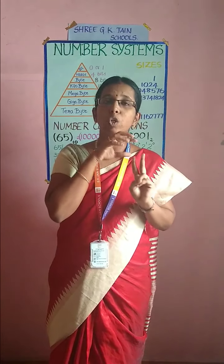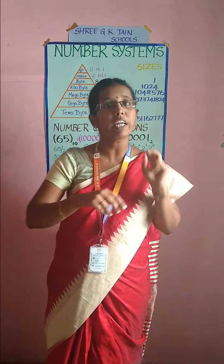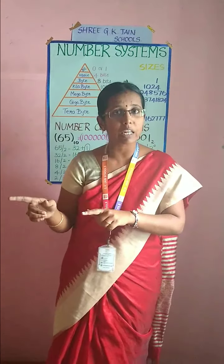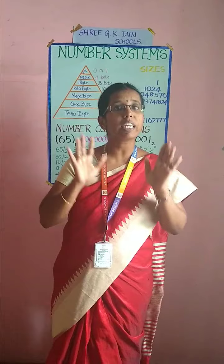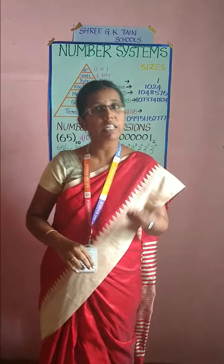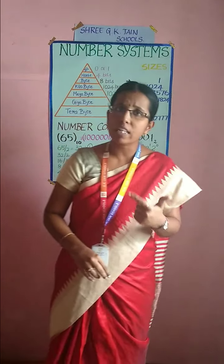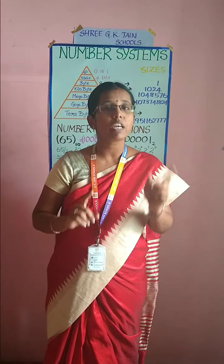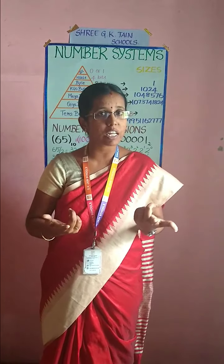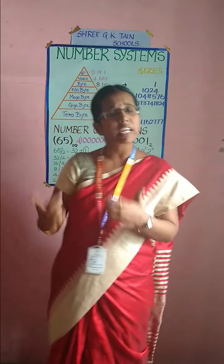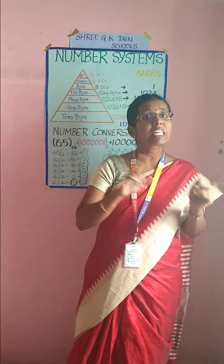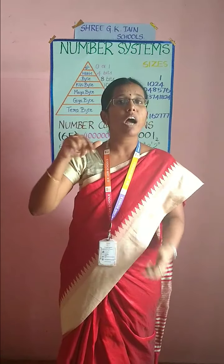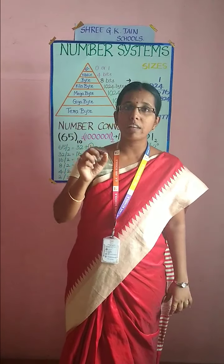For example, if you have 0 and 1 in binary, the base value is 2, because you have only 2 numbers. So the base value of binary is 2. For decimal, you have 0 to 9, which is 10 numbers, so the base value of decimal is 10. For octal, you have 0 to 7 — a total of 8 elements — so the base value of octal is 8.